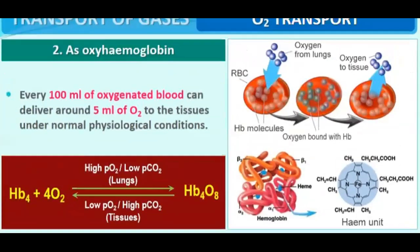Every 100 ml of oxygenated blood can deliver 5 ml of oxygen to the tissues under normal physiological conditions. So if a person is healthy and normal, 100 ml of blood is capable of transferring 5 ml of oxygen.